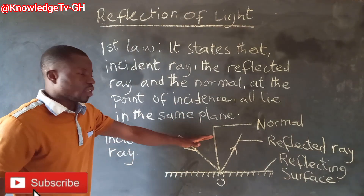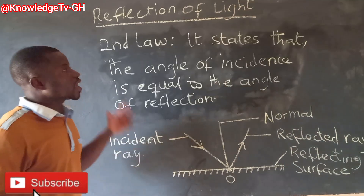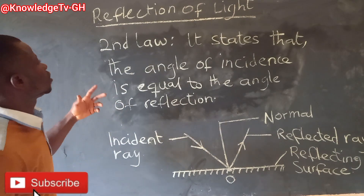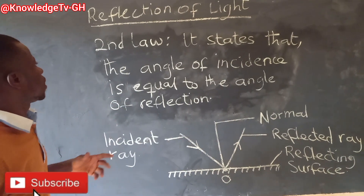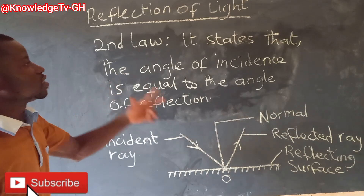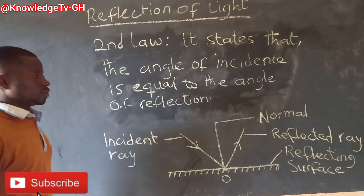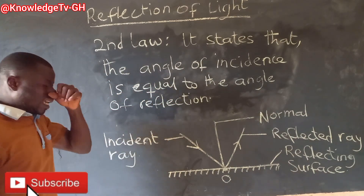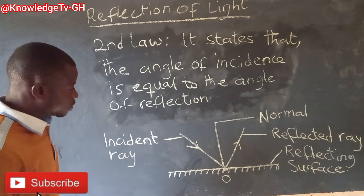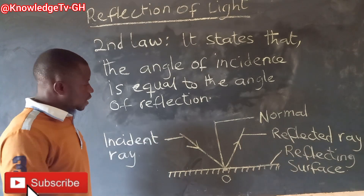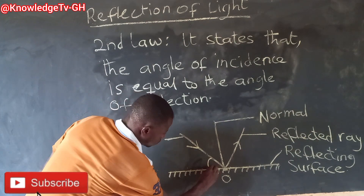The second law of reflection states that the angle of incidence is equal to the angle of reflection. So let's go to the diagram and indicate the angles. This is the angle of incidence.